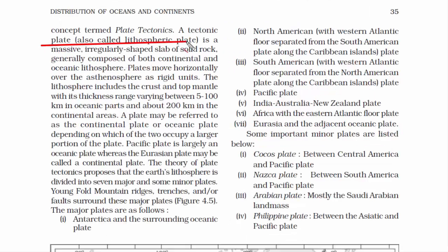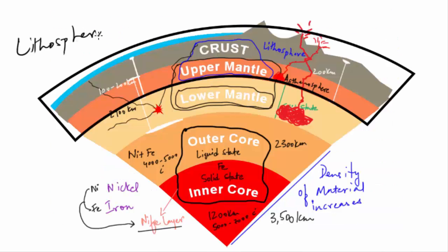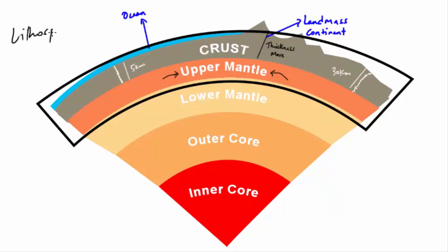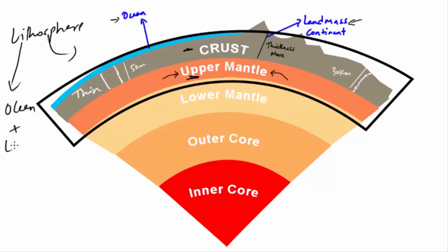The plate tectonics concept says that the lithosphere — the combination of crust and upper mantle — exists in the form of irregular slabs of solid rock. Think of the lithosphere as a large plate. The lithosphere consists of crust and upper mantle, and the crust is both continental and oceanic in nature. The oceanic crust is thinner than the continental, but together it forms one complete crust, meaning the lithosphere covers both ocean and land. Therefore, each plate consists of land as well as ocean.